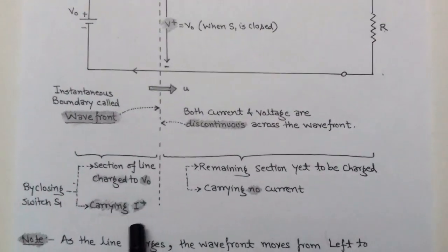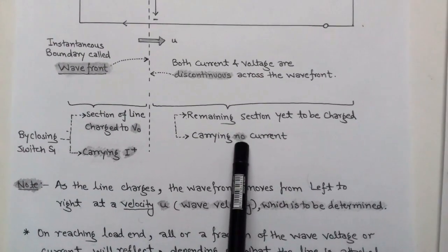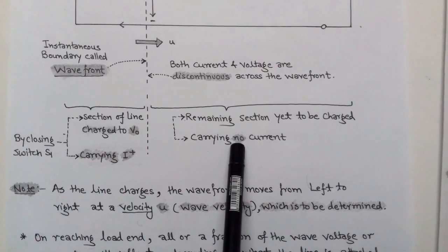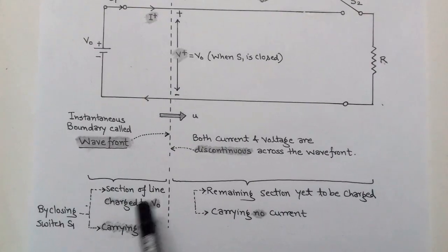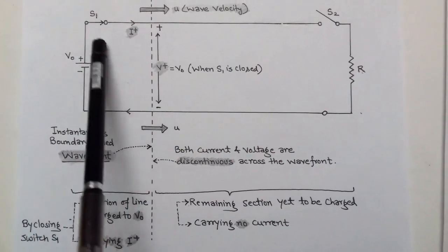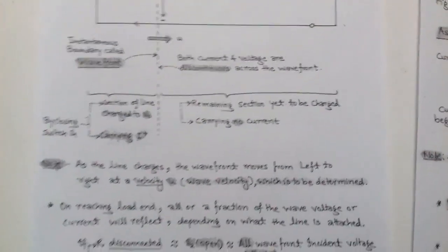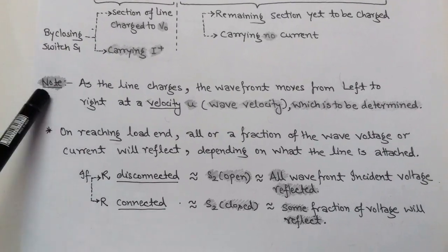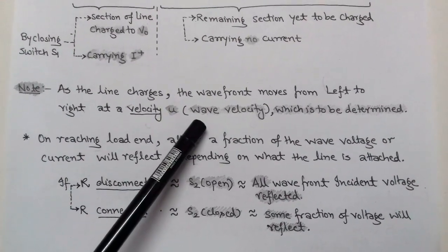The wave front is a boundary at which both current and voltage are discontinuous. To the left of this boundary the line is charged, while to the right the remaining line is yet to be charged and carries no current. The section left of the wave front is charged to voltage V0 and carries incident current I+. This happens when switch S1 is closed and S2 is open. As the line charges, the wave front moves from left to right with velocity U, and our task is to determine this wave velocity.